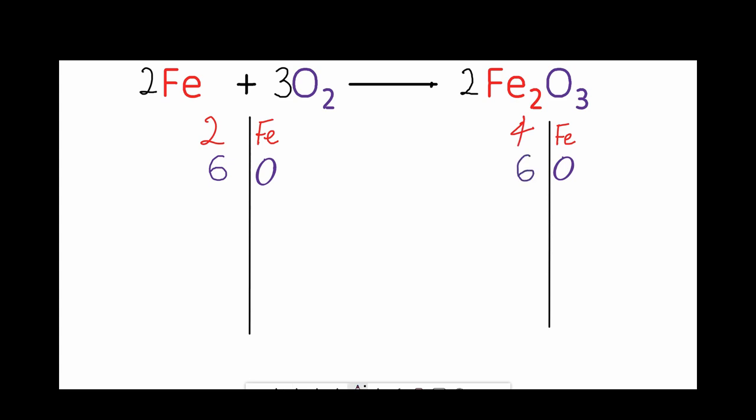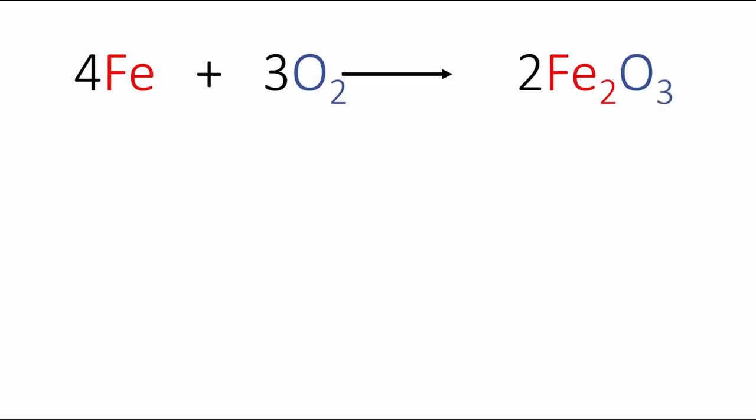So now my oxygen is balanced but my iron is not. Again, this is a simple thing. I can double the two I already have, so change that to four. And that means that I have four iron atoms on the right and four iron atoms on the left. And that's it, we're all balanced.